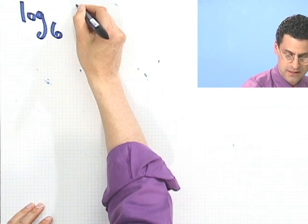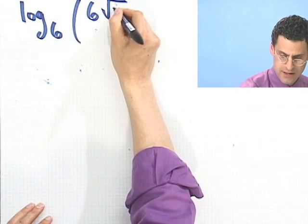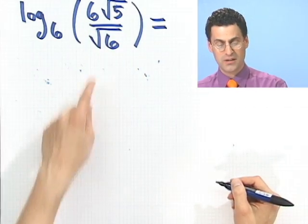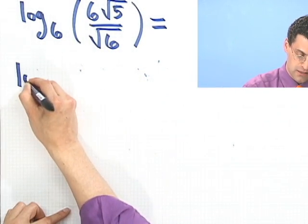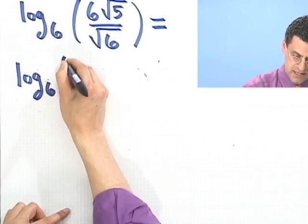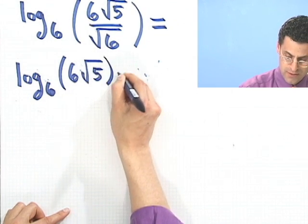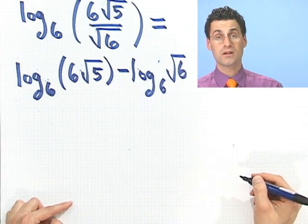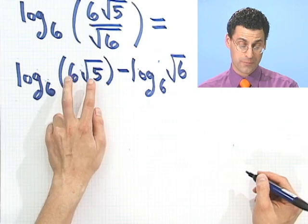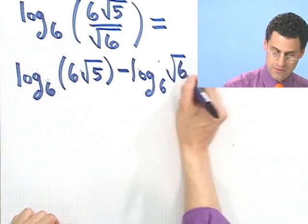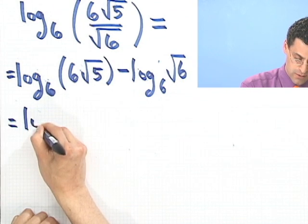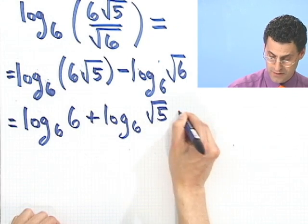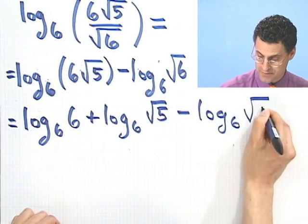Log base 6 of 6 square root of 5 divided by square root of 6. Well, here again I see a quotient, so I could write this as log base 6 of the top, 6 square root of 5, minus log base 6 of the bottom, square root of 6. Okay, what else can I do? Well, this is actually the log of a product, so that's the sum of the logs. So in fact, this equals log base 6 of 6 plus log base 6 of the square root of 5 minus log base 6 of the square root of 6.